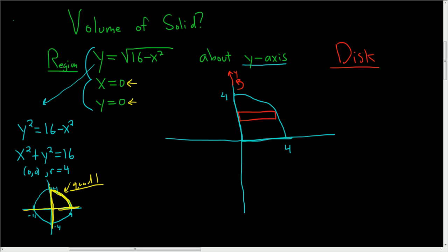Because we have a horizontal rectangle, we're going to have functions of y. So if you had a vertical rectangle, you would have a function of x. But since we have a horizontal rectangle, we have a function of y.